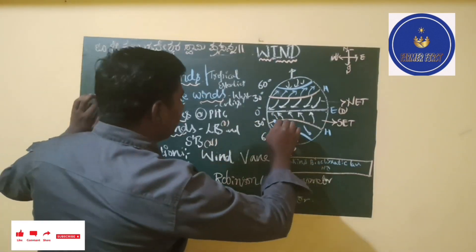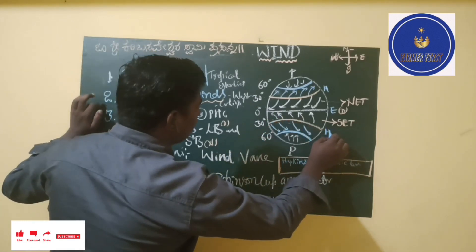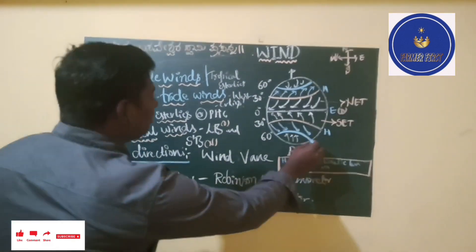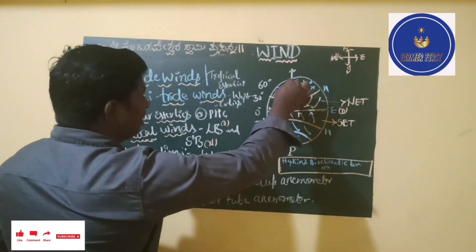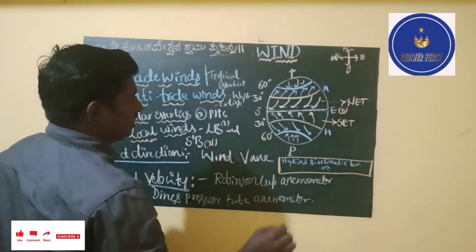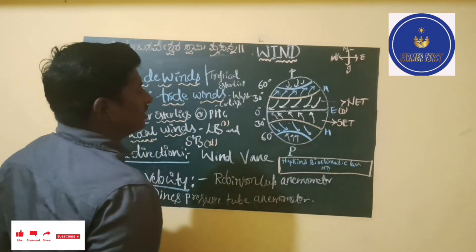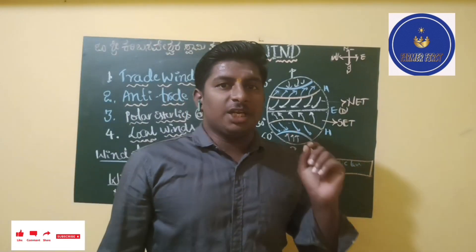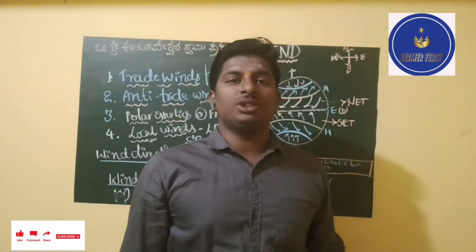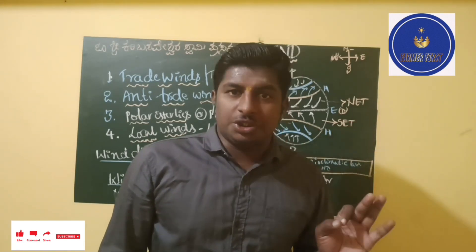Anti-trade winds are opposite to trade winds. These anti-trade winds flow from the higher pressure gradient at the horse latitudes towards the lower pressure gradient at the poles. In the northern hemisphere they flow from south to east direction; however, in the southern hemisphere they flow from north to east direction.